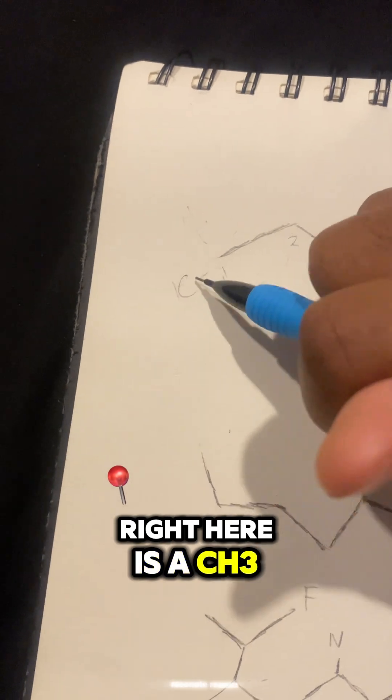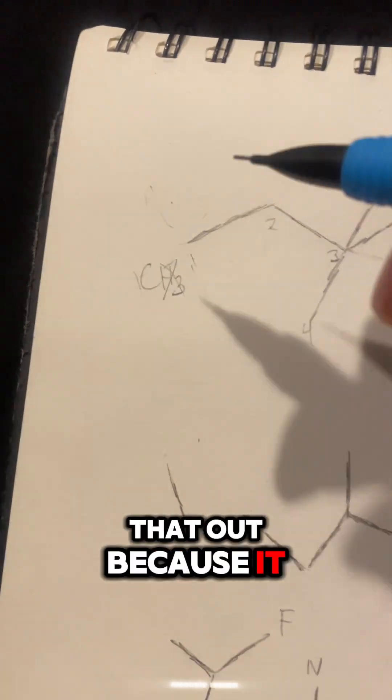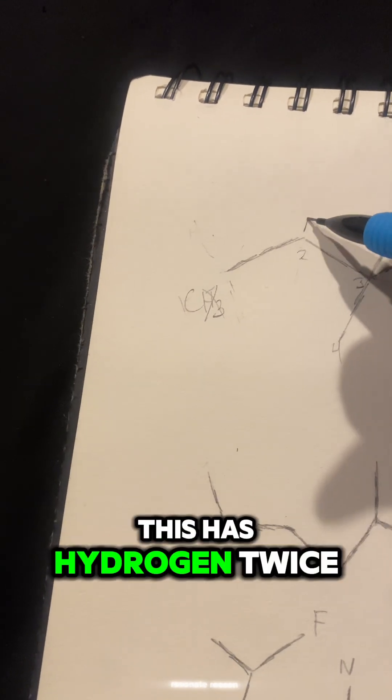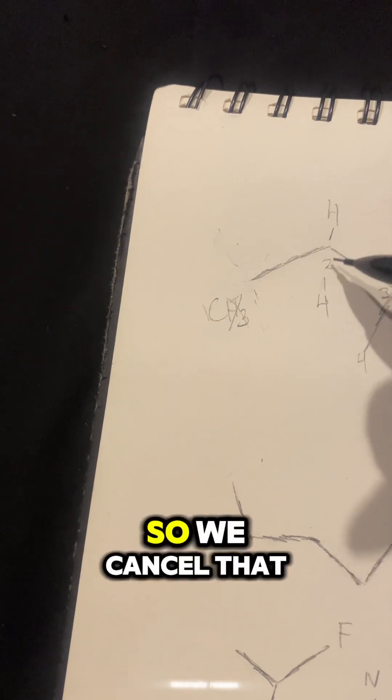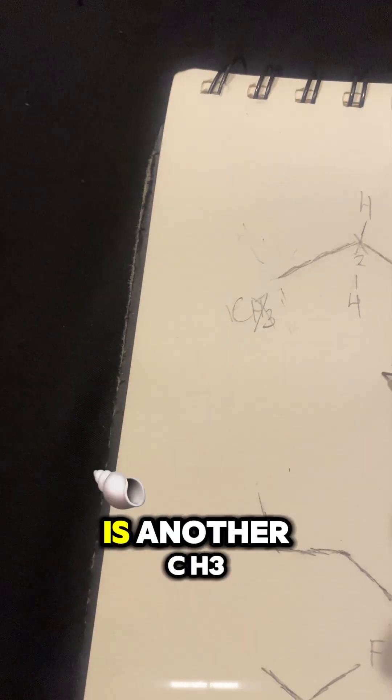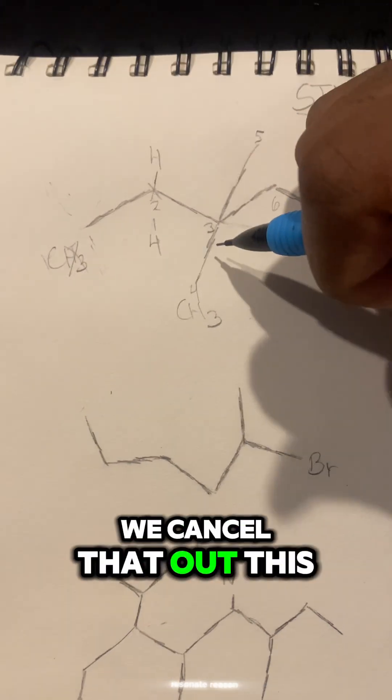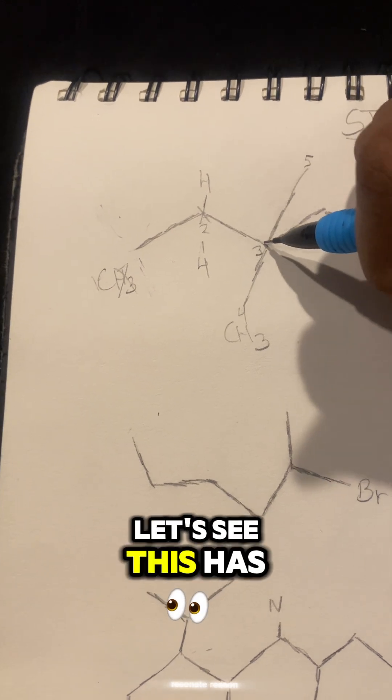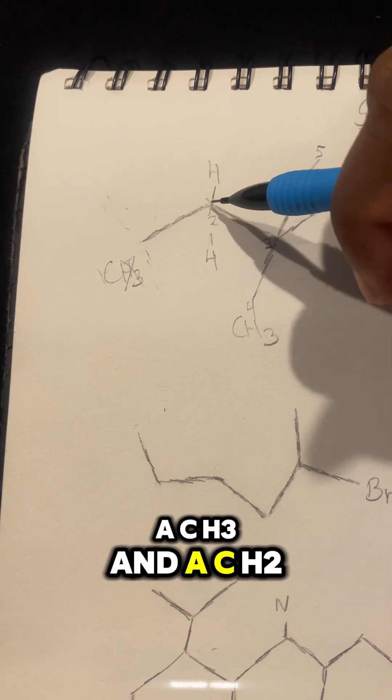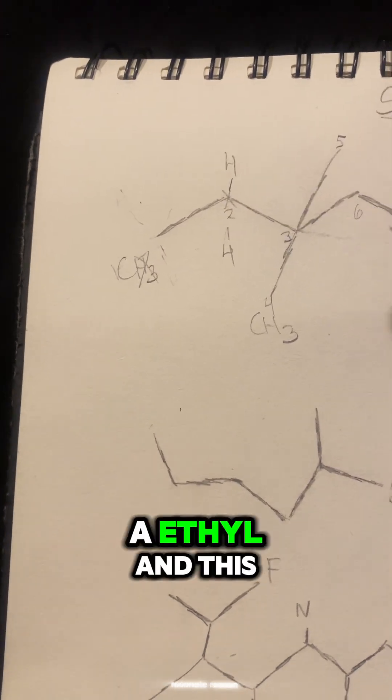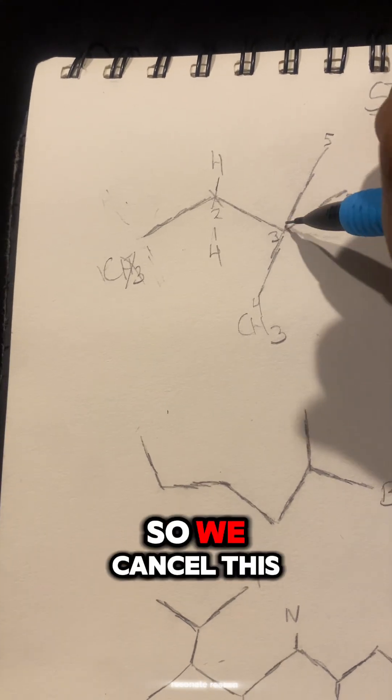So we know this right here is a CH3, so we can cancel that out because it has hydrogen three times. This has hydrogen twice, so we can cancel that out. This right here is another CH3, we can cancel that out. This right here has a CH3 and a CH2. This is an ethyl, but this is also an ethyl, and this is a methyl, and this is a methyl, so we can cancel this out.